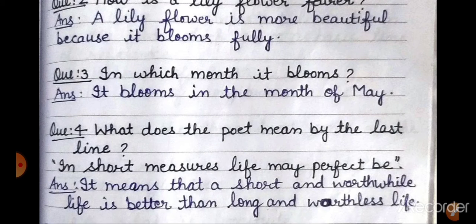Moving to our last question: what does the poet mean by the last line — 'In short measures, life may perfect be'? इस से poet का क्या मतलब है? Answer: it means that a short and worthwhile life is better than a long and worthless life.